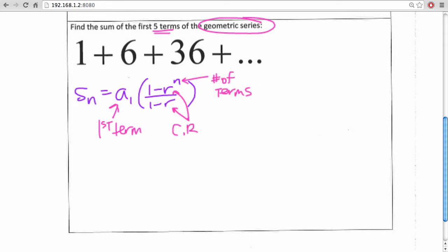So let's list out some of the information we know. We know that A sub 1 is 1. We're looking for our common ratio. We can determine the common ratio by identifying what we multiply each previous term by to get the next term in the series. In this case, we're multiplying by 6 each time, and n is 5 because we're looking for the sum of the first five terms.